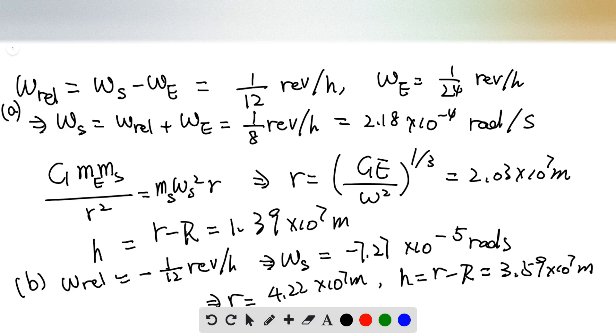Because 1 revolution is 2 pi radians and 1 hour is 3,600 seconds, we get this final answer for the angular speed of the satellite is 2.18 times 10 to the negative 4 radians per second.